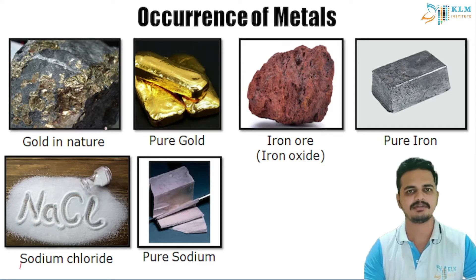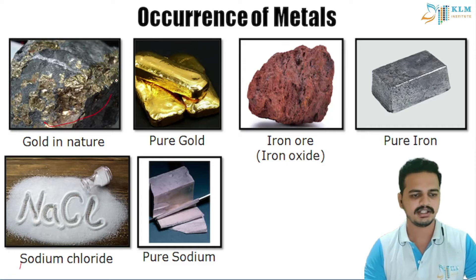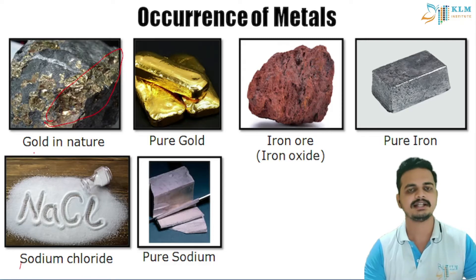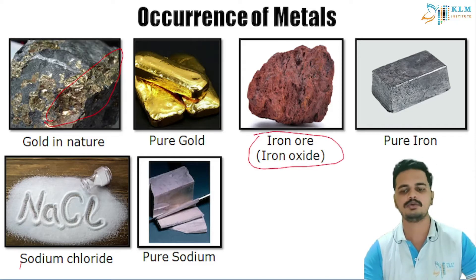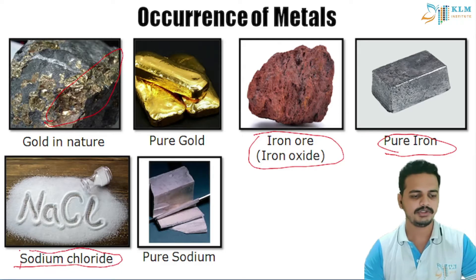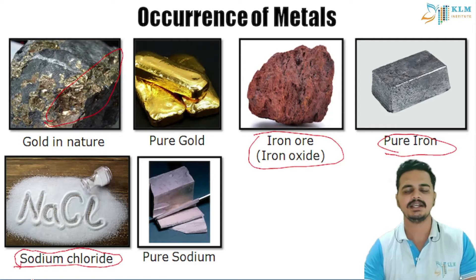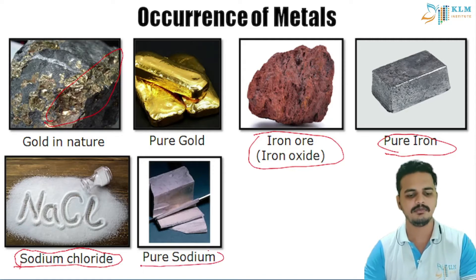Hello students, this is the final part of the chapter Metals and Non-Metals. In this video we are going to study about occurrence and extraction of metals. Gold in nature is present in its pure form mostly because it is non-reactive. Iron is present in iron oxide, so we have to purify it to form pure iron. Sodium is present in sodium chloride, which is found in the sea.